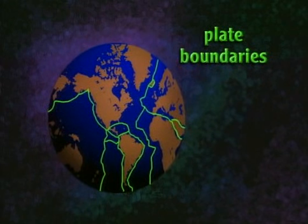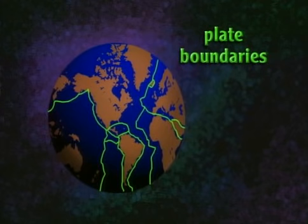About 80% of all volcanoes occur at boundaries where plates come together. 15% occur at boundaries where plates separate from each other, and only the remaining 5% occur within the actual plates. There aren't any plate boundaries in Washington, D.C., so there are no volcanoes there.